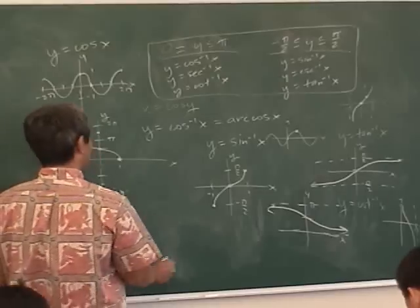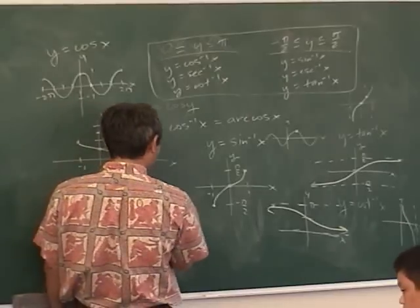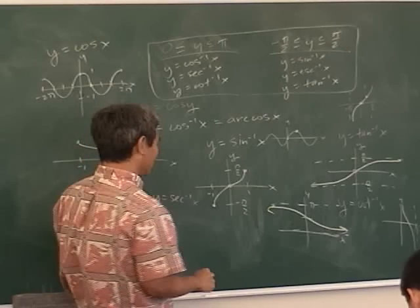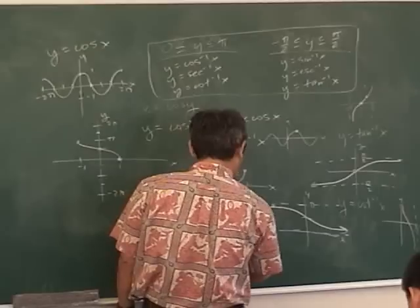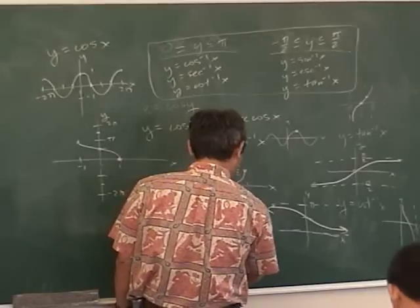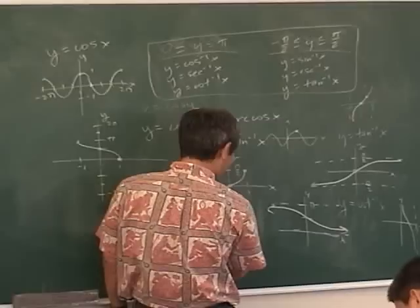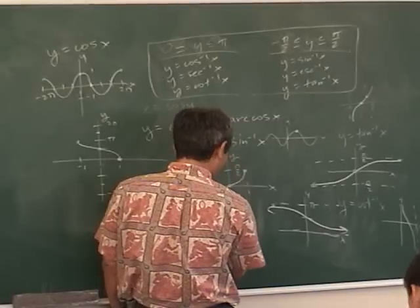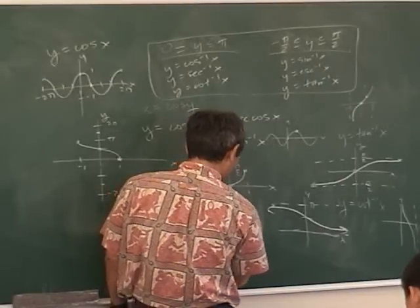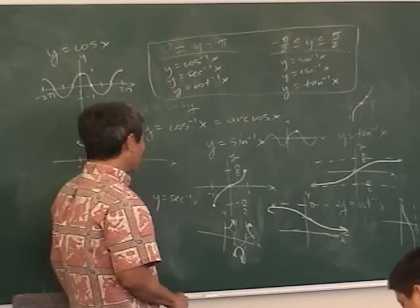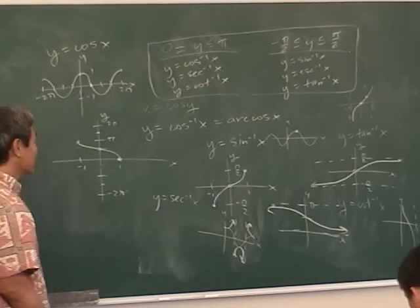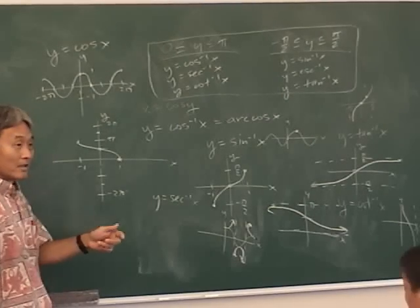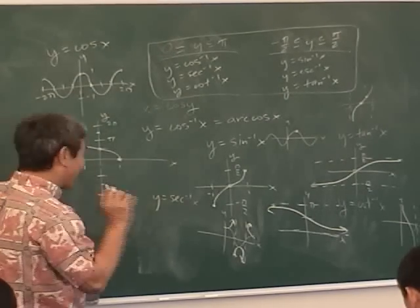What about secant inverse? Think about how we graphed secant when we first learned it: first you graph the cosine graph, and then you hump up and down. Wherever it touches the x-axis, you get a vertical asymptote — if it's humping down, you hump up, then hump down, then hump up. So for the inverse, instead of humping up and down, you hump left and right, because you're just switching the x's and y's.